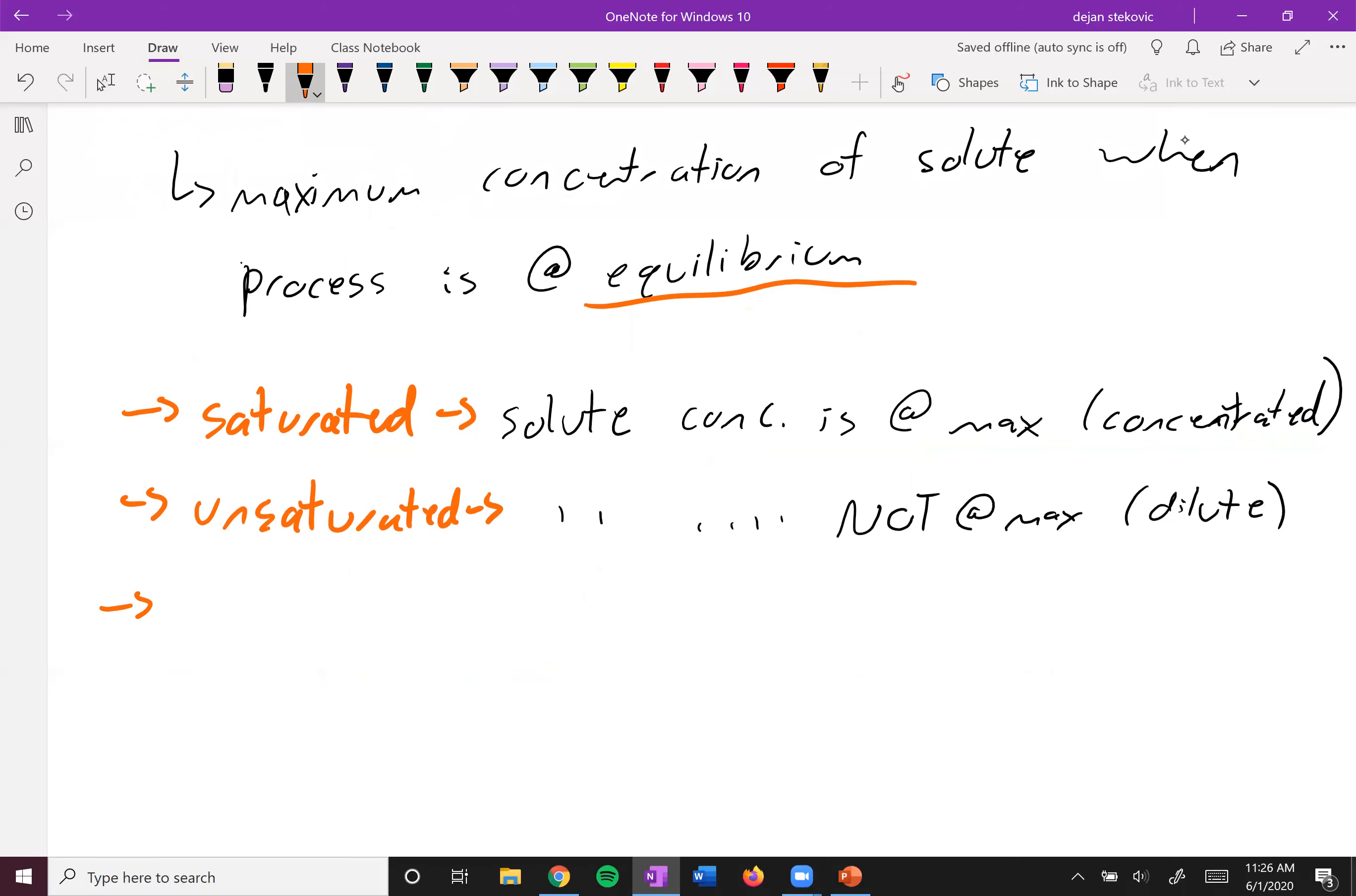And then finally what we have is a supersaturated solution. In a supersaturated solution, the solute concentration is above the maximum solubility. So how can you have something that's above the maximum solubility, how can you dissolve something more than the maximum? The caveat here is that we're not at equilibrium.